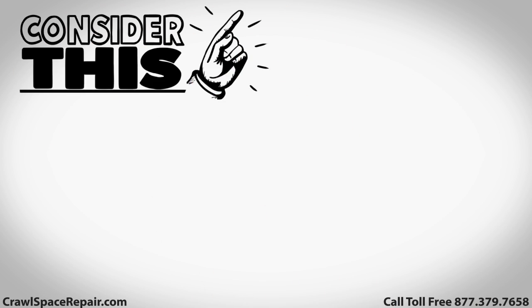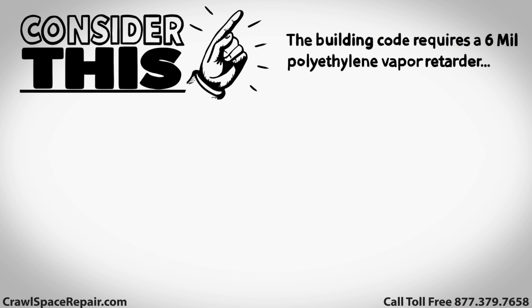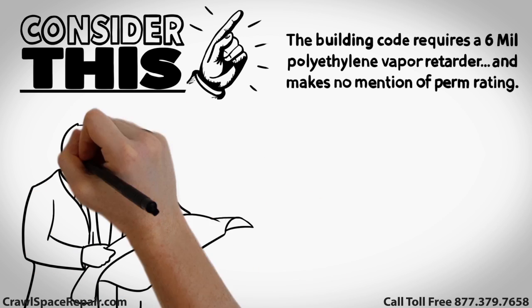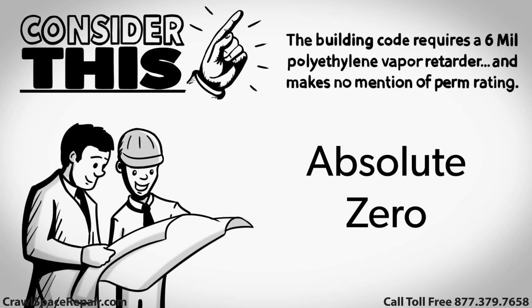Consider this as you research products for your home. The building code requires a 6-mil polyethylene vapor retarder and makes no mention of perm rating. Even though the folks that write the building code are not all-knowing, they are engineers and educated building professionals that know how to build a home properly, so exceeding that minimum requirement is a good thing. However, if an absolute zero perm was practical to achieve, we would all be required to implement it.